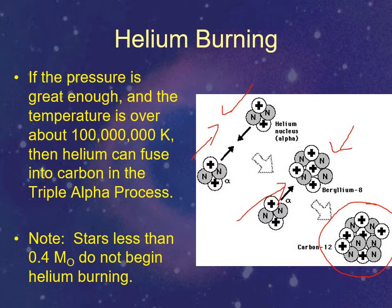Stars that are really huge — like 10 or 15 solar masses — can actually start this helium-fusion process before the core gets totally dead, so they don't go through the red giant stage in the same way. For stars less than 0.4 solar masses, they never get hot enough to do this, so they will just gradually go into a red giant stage and not go beyond that.